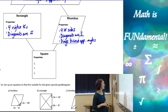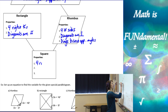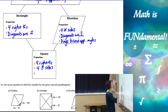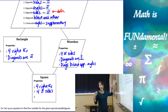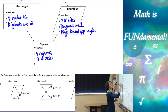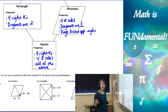A square has four right angles and four congruent sides — that's its definition. Because squares are rectangles, rhombuses, and parallelograms, all of the above properties apply to squares. Everything trickles down from our map.